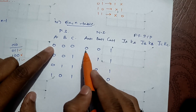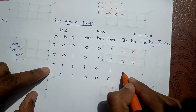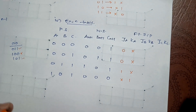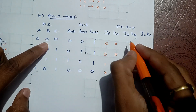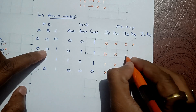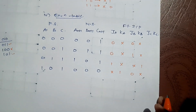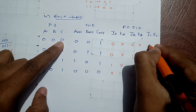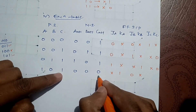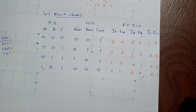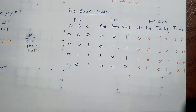Filling in the JK excitation values: For JA, KA — first combination (0→0): 0, don't care; second (0→0): 0, don't care; (0→1): 1, don't care; (1→0): don't care, 1. For JB, KB: (0→0): don't care, 1; (0→1): 1, don't care; (1→0): don't care, 1; (1→1): don't care, don't care wait — correcting per table. For JC, KC: (1→1): don't care, 0; (1→1): don't care, 0; (0→1): 1, don't care; (1→0): don't care, 1.